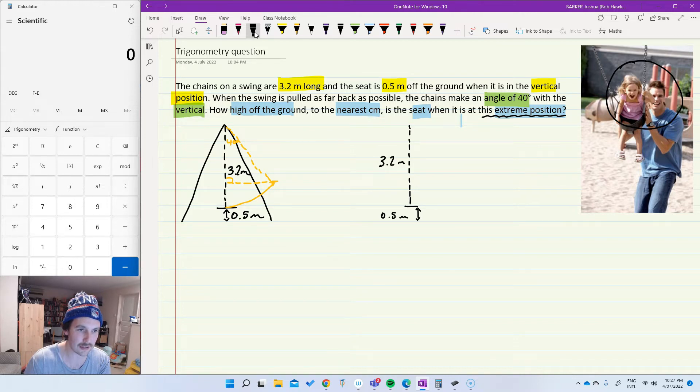So 3.2 meters is the length of the whole thing. But what we could do using our knowledge of trigonometry is find the distance between the bottom of this right angle triangle that I've created here and the top of the swing. I'm going to call that length X. So between here and here, that's going to be X.